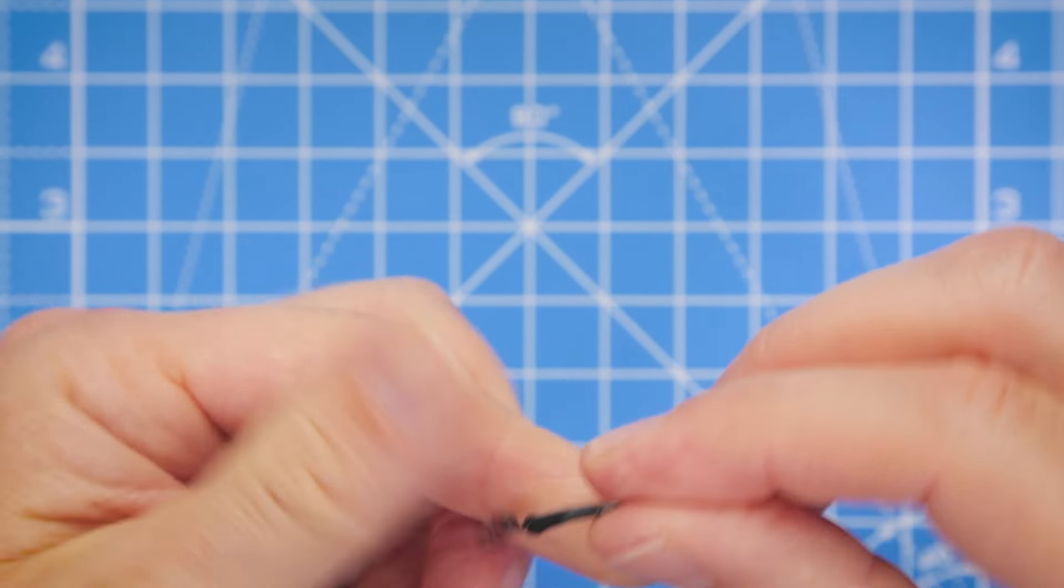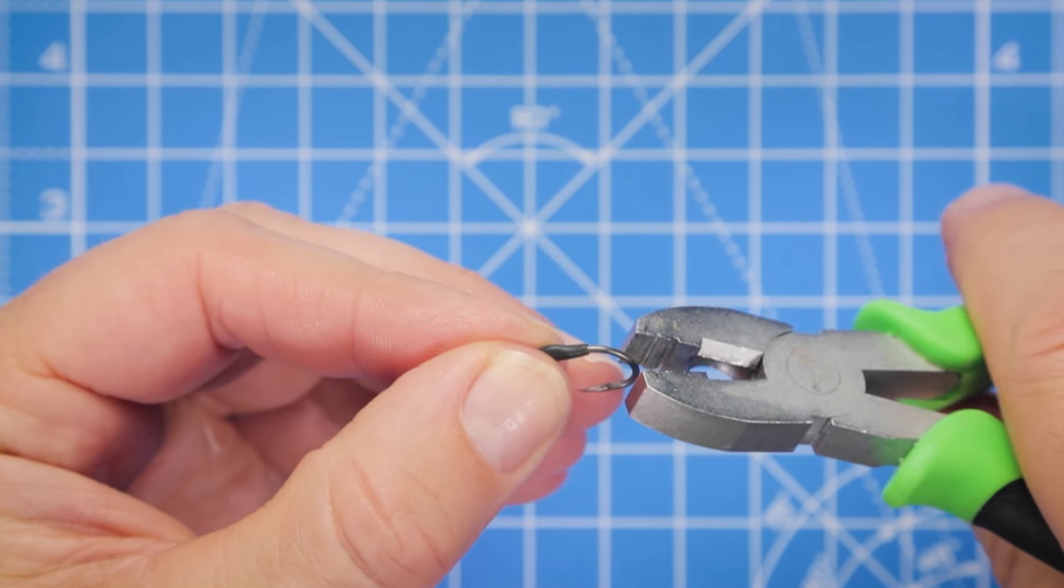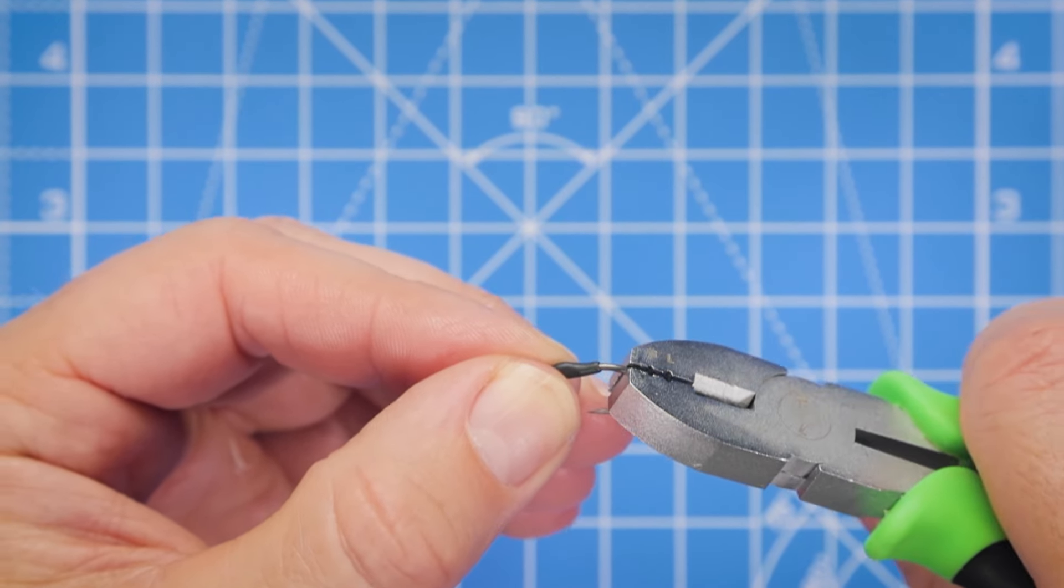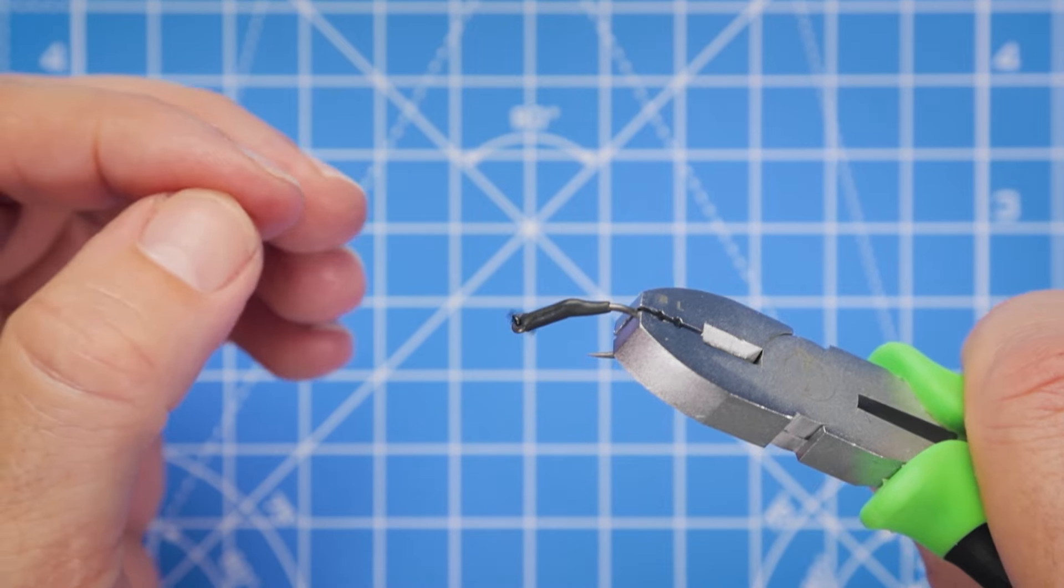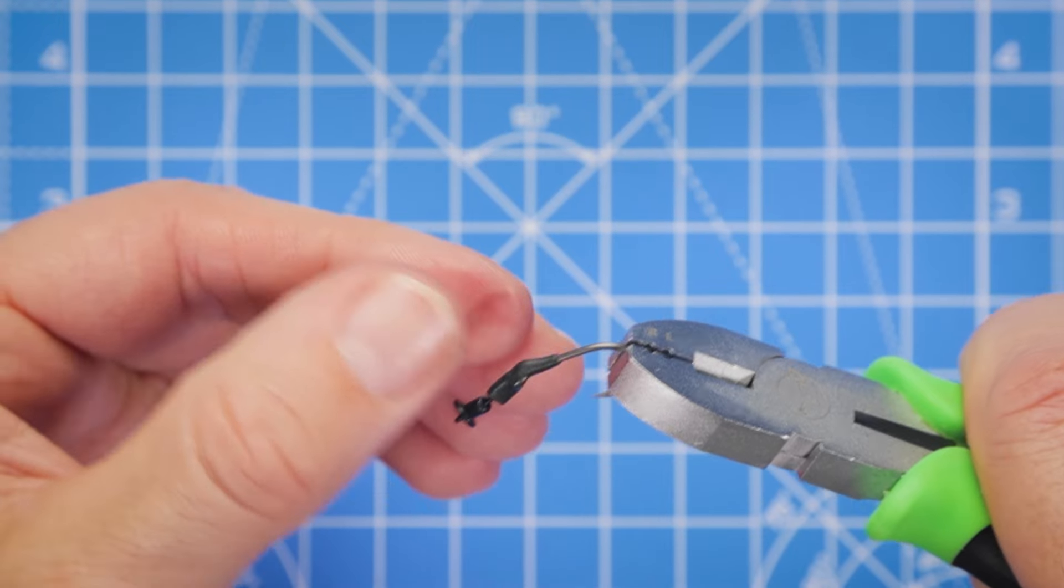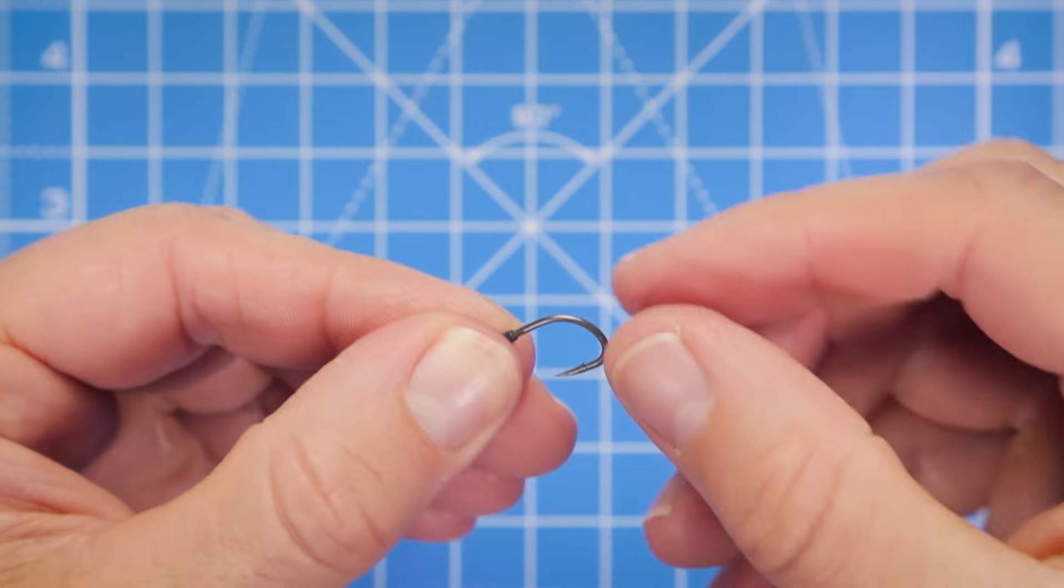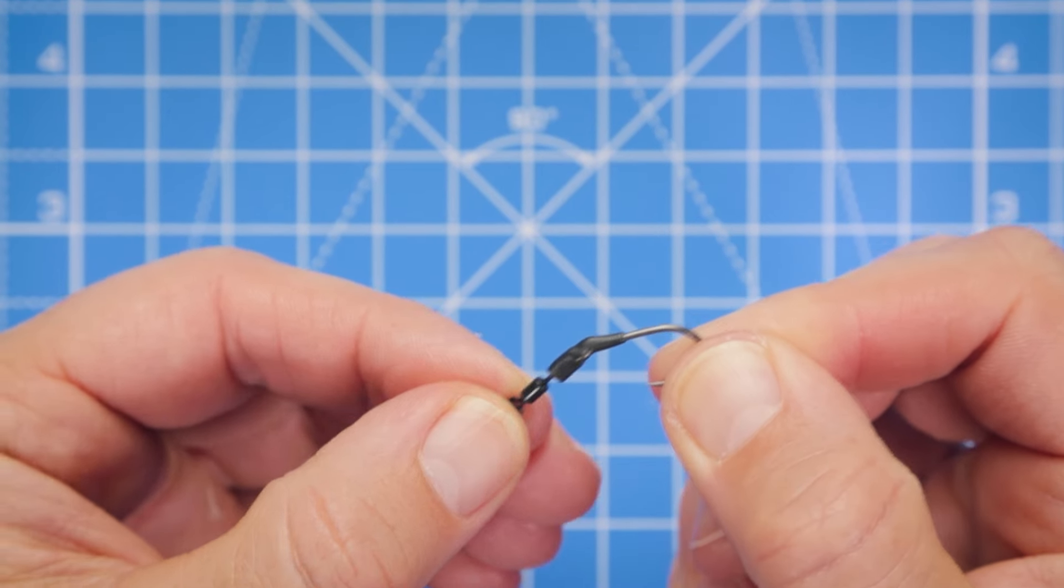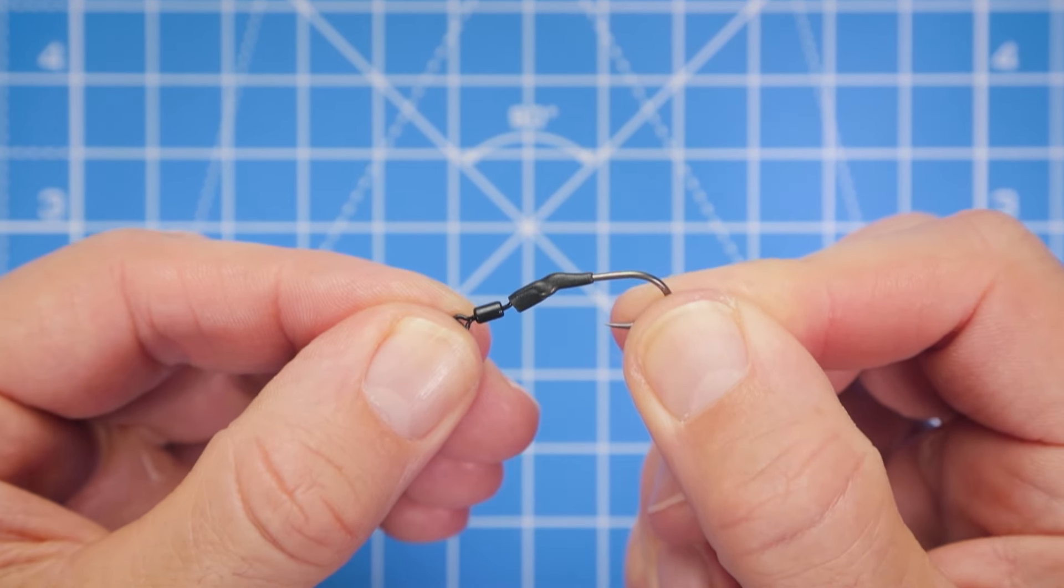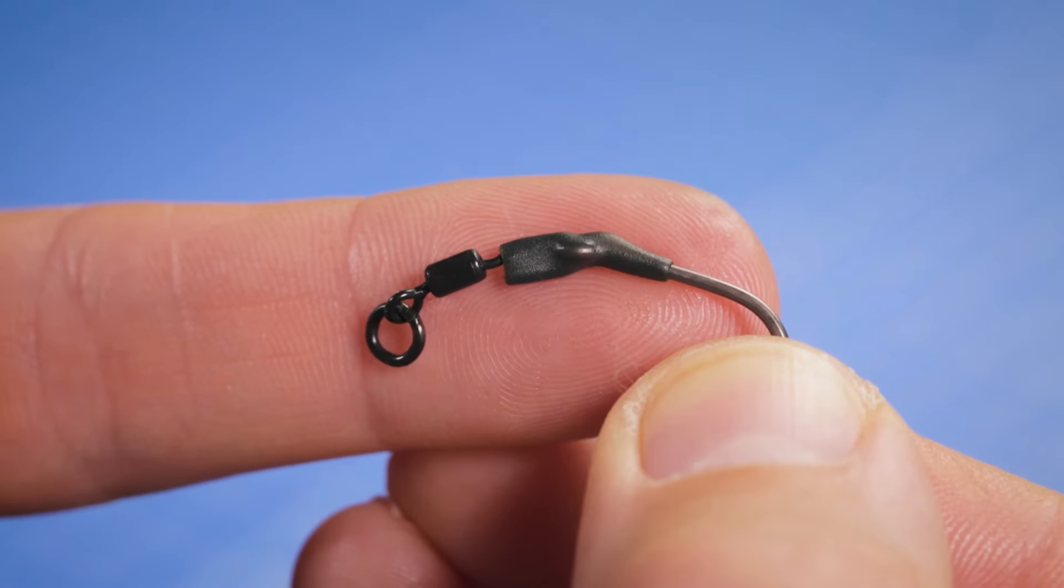So I like to take my pliers, grip the hook carefully being careful not to damage the point, and then it's really easy to just slide that kicker down onto the spinner swivel. It neatens everything up. The hook is now attached to the spinner swivel easily and neatly, and we're ready to move on to the next step.